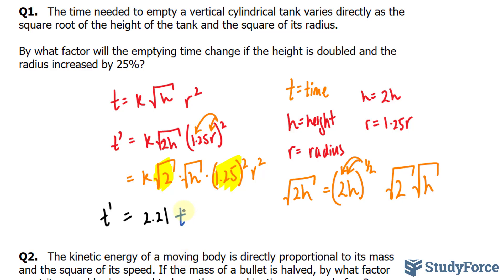Now, since they're asking for a factor, our answer is 2.21 times the original t. But if they're asking for a percentage, you would say that the original time will have to increase by 121% of the original.